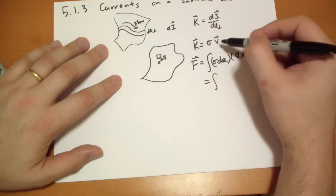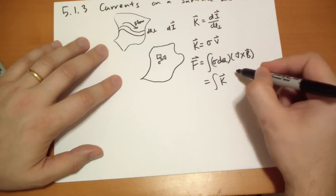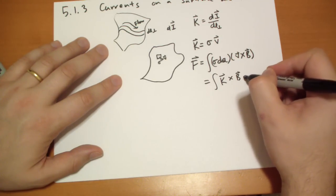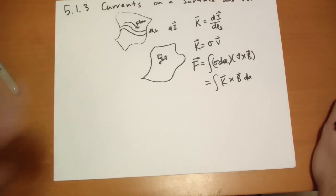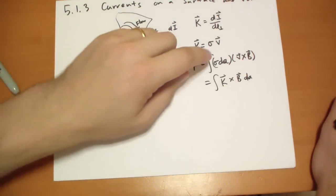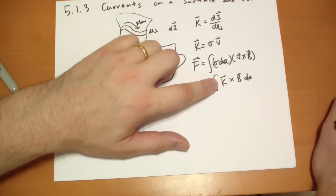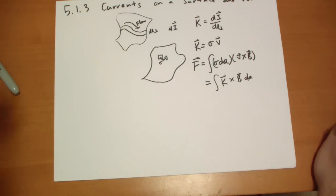well, k is sigma v, so we take that sigma v, so we have k vector cross b, and what's left over is the dA. So we just go across the surface and add up all the sigmas and the directions they're moving, we get that's a k at each point. And we can calculate the magnetic force there.